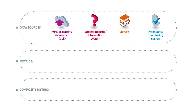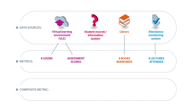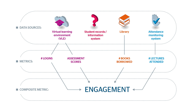Those metrics might be things such as the number of times students attend lectures, how often they're on campus, how often they go into the virtual learning environment, or the number of library books they borrow. These metrics in turn can produce what's called composite metrics, which might, for example, be an indicator of a student's overall engagement with their studies.